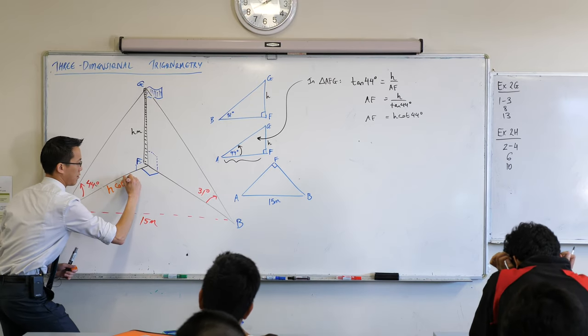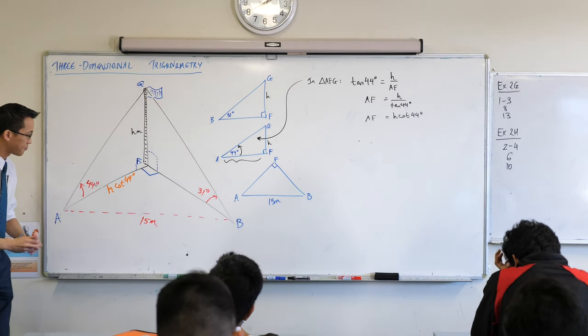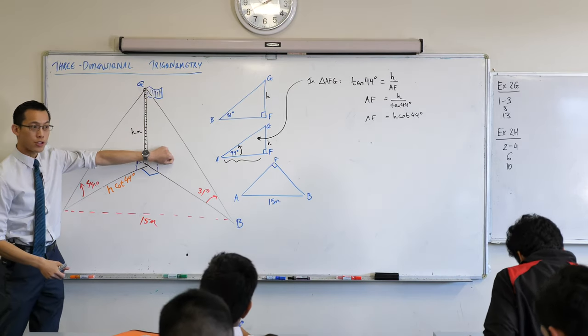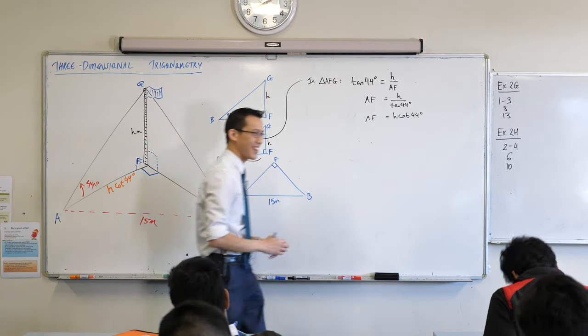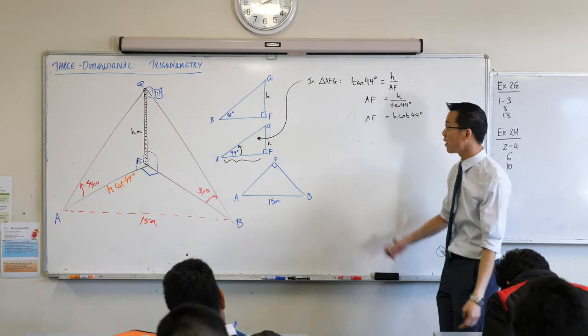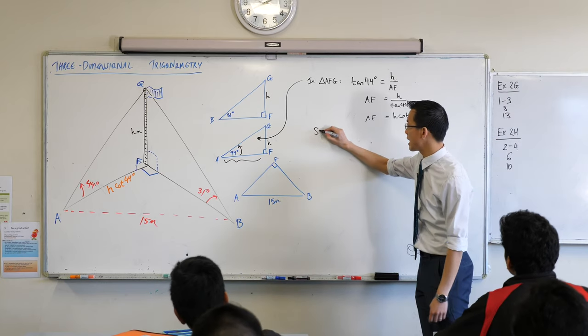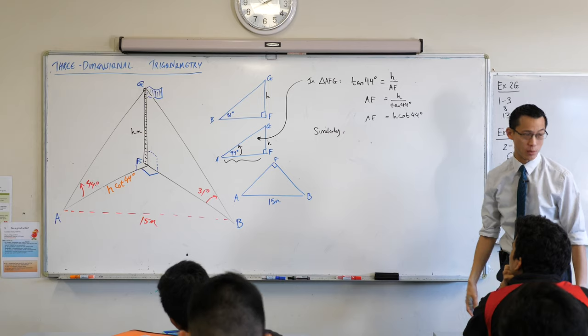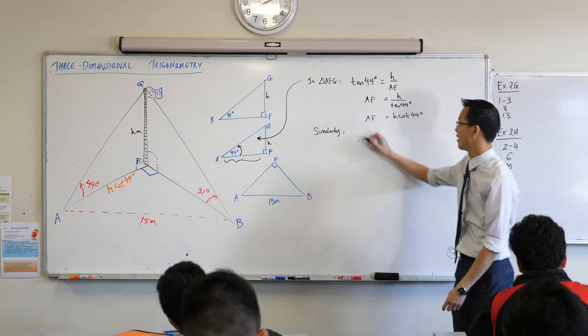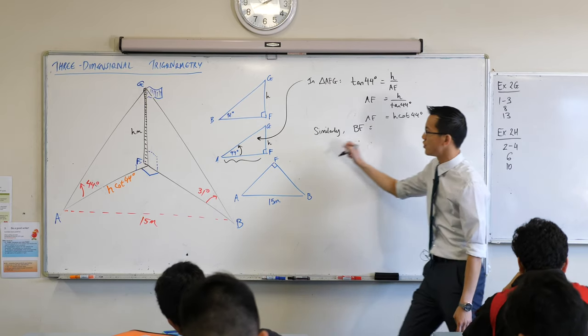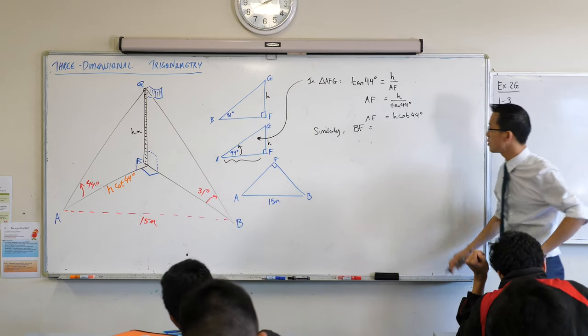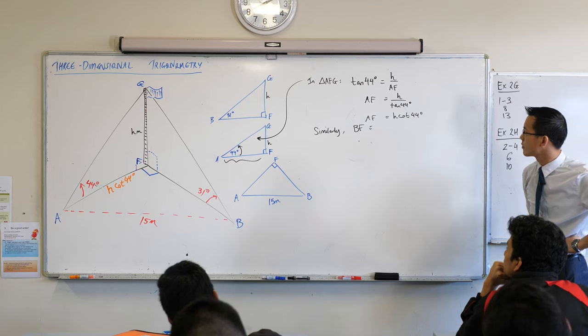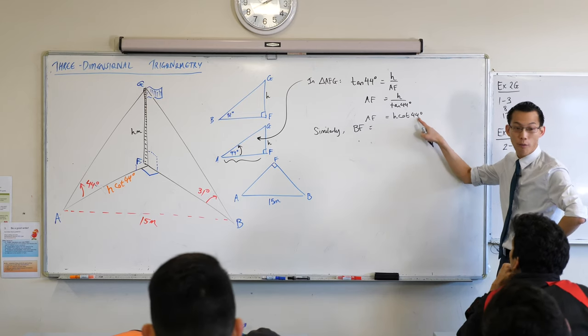Now because I'm going to repeat the same process but for this other triangle, for BFG, the process is identical, so I'm not going to write it all out. I know where I'm going to end up. All I need to say is 'similarly'—it's the same logic, so I don't need to rehearse these lines all over again. I'm going to say BF, which is this other distance on the ground, what's it going to be equal to? Just have a look on my triangles. If this one's H cot 44 degrees...